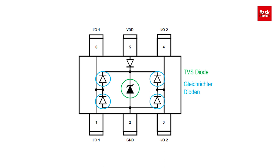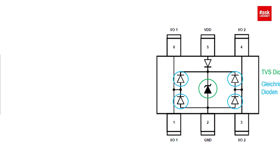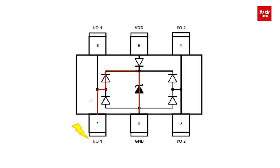In this picture you can see a TVS rectifier, where diodes take the voltage and guide it to the TVS diode. In the next picture, you can see the over-voltage condition, where the diode guides the current through the TVS diode and sends it to ground.